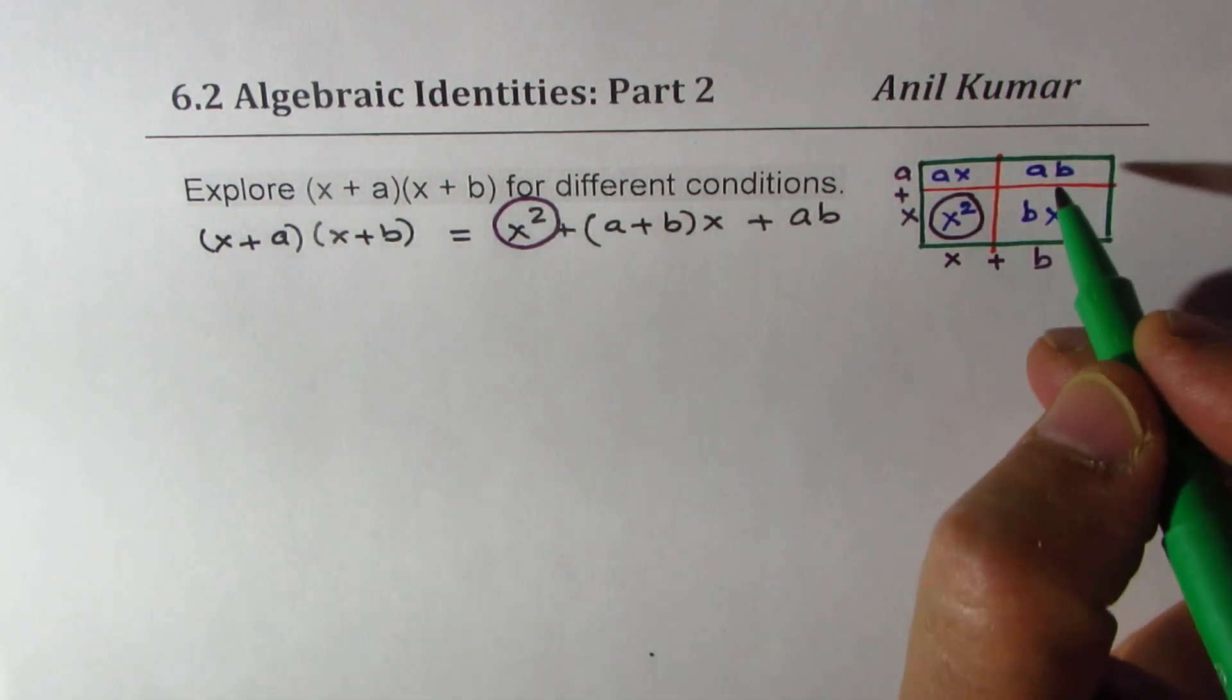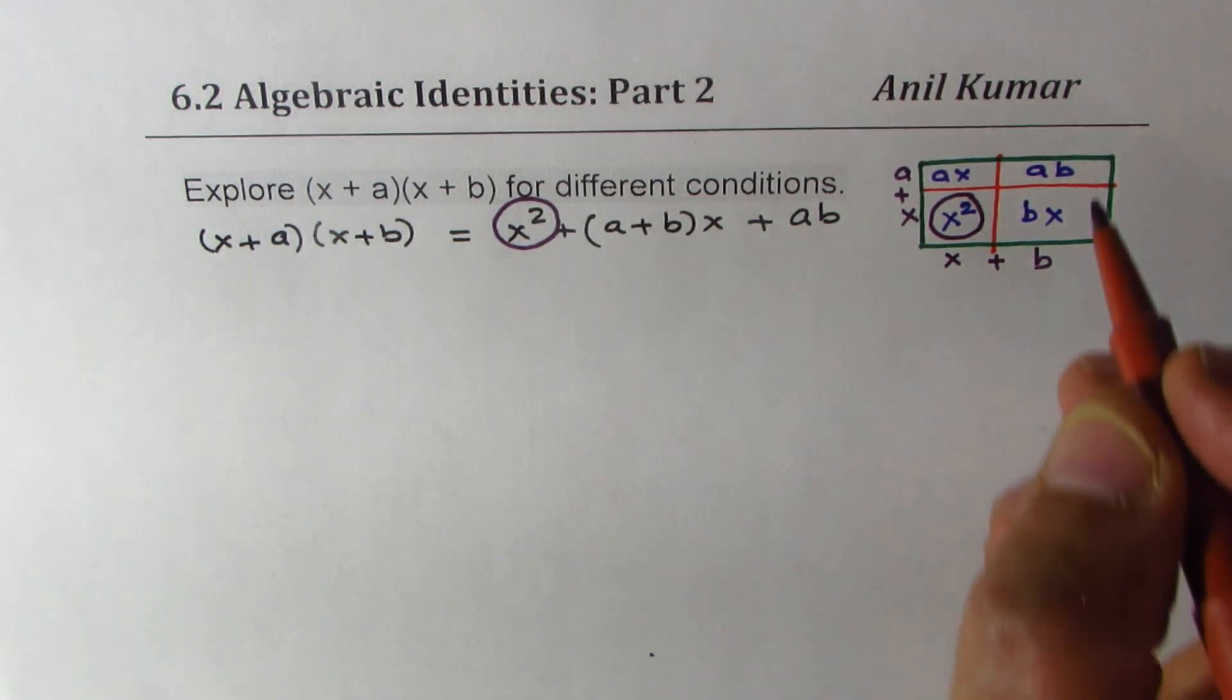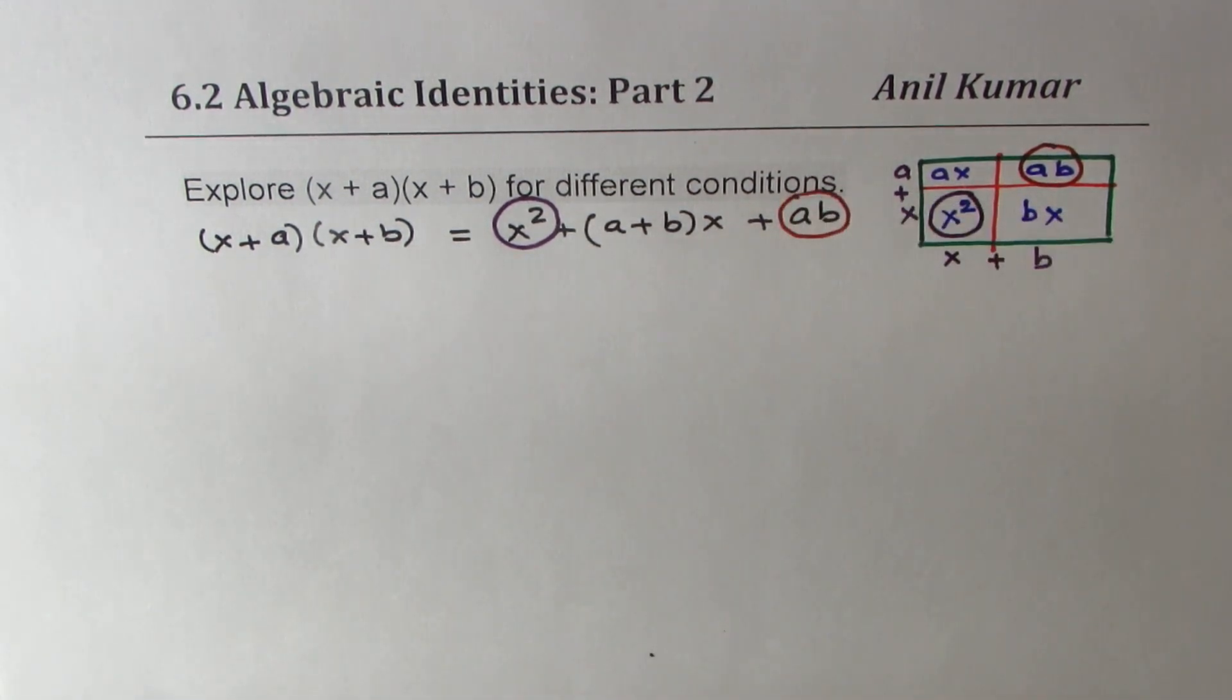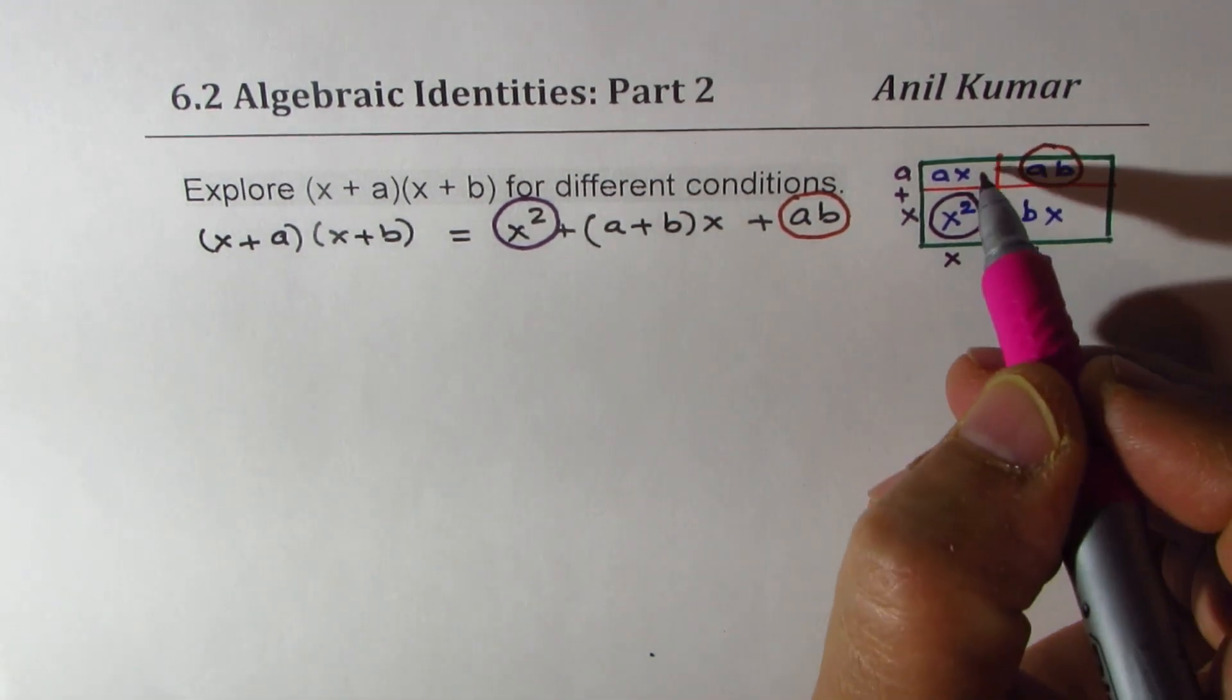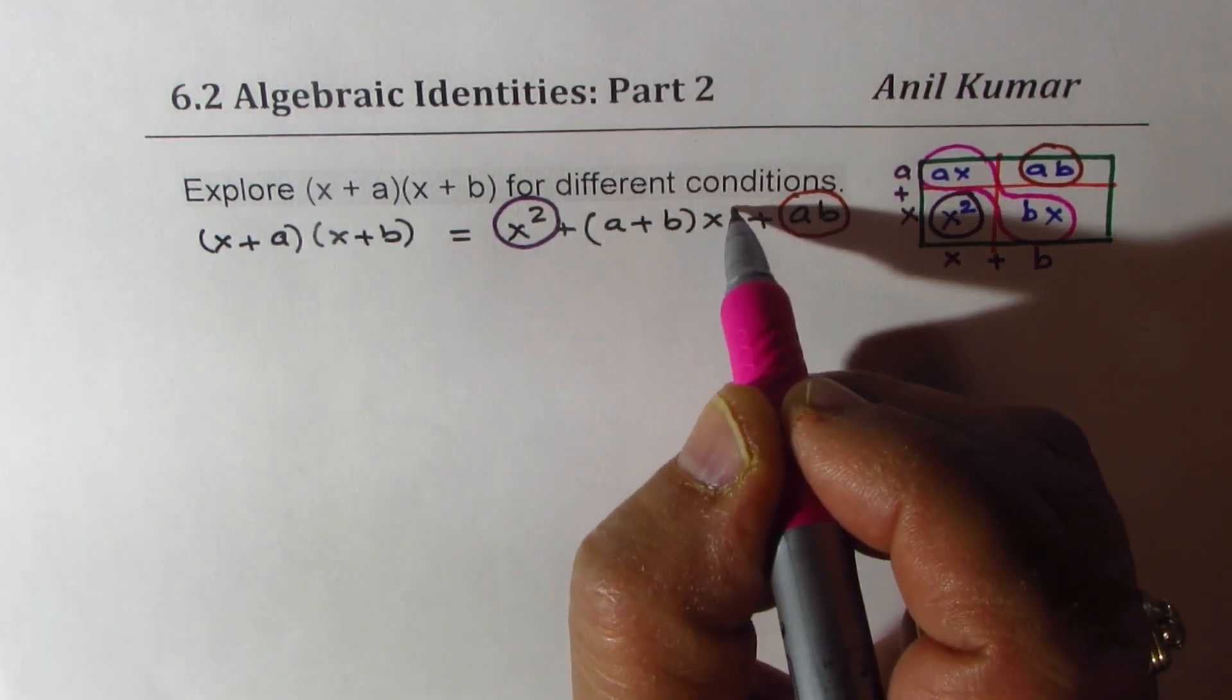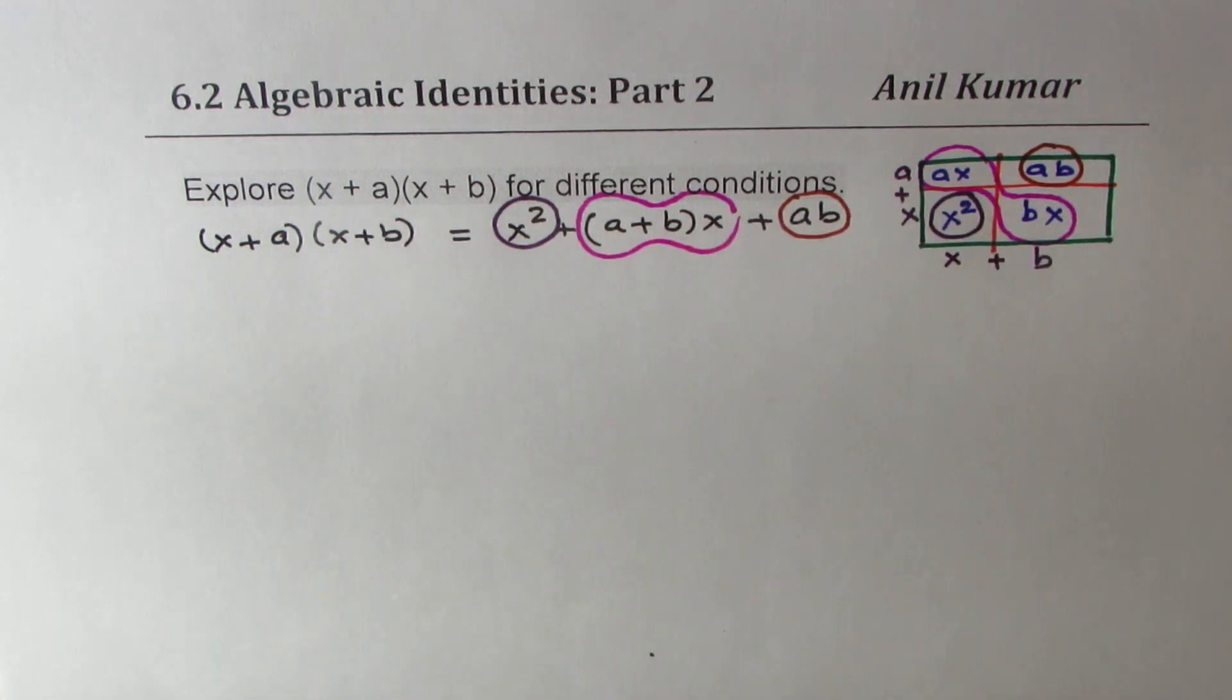We have ab here. So that is this part, ab. And we have a combination of two. x is common. We have a plus b. So this is that combination right in the center. Do you see that? So this expansion relates to area of a rectangle, where the two factors could be treated as sides of a rectangle.